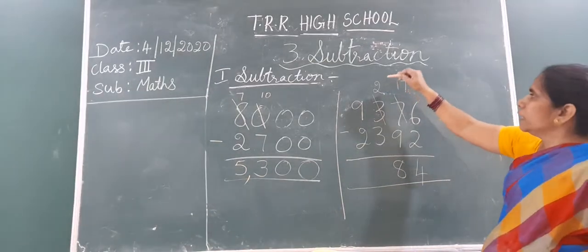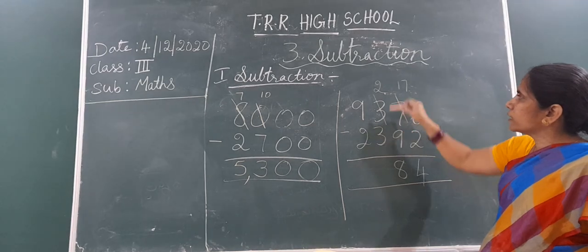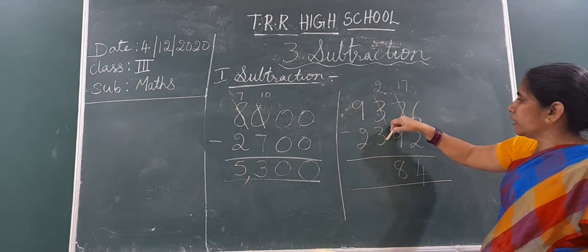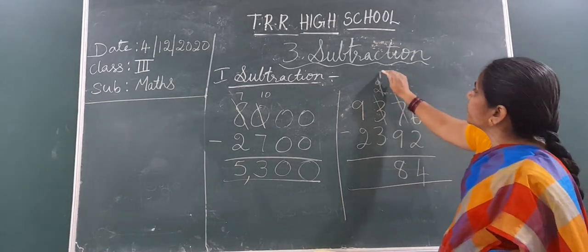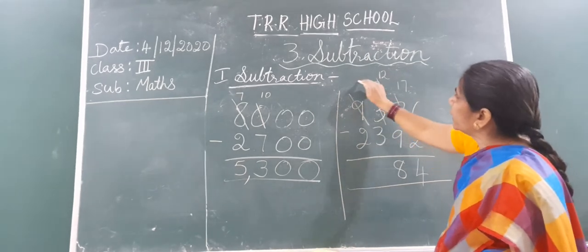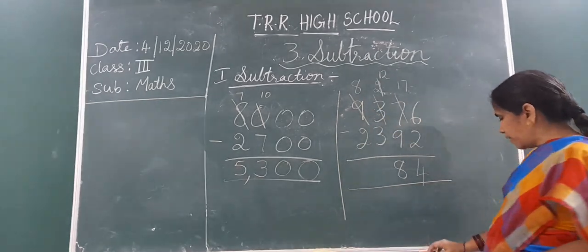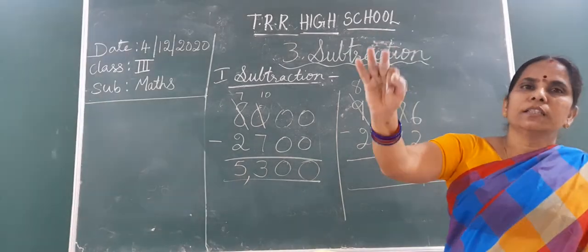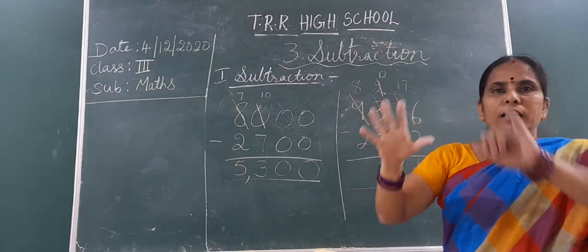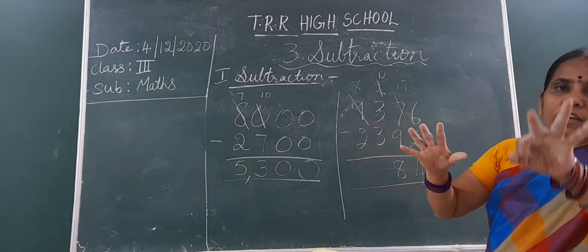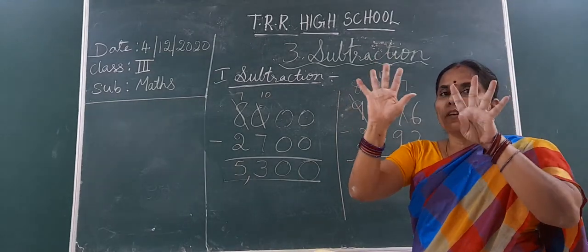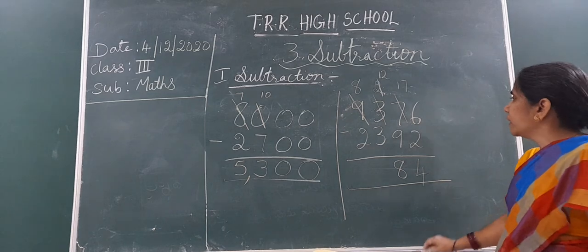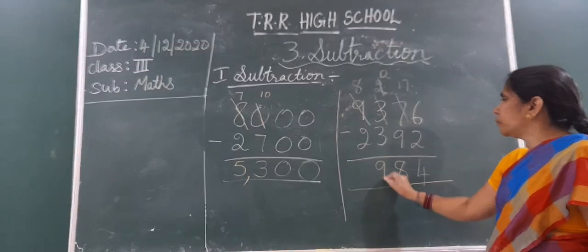Now, go to the hundreds place. Here 2 is there. Down 3 is there. 2 is smaller than 3. So, what you will do? Again you must say borrow. Immediately 9 cut and write 8. Now, again close fingers. 3 after 4, 5, 6, 7, 8, 9, 10, 11, 12. How many fingers you open? 9 fingers. So, write 9 here in the hundreds place.